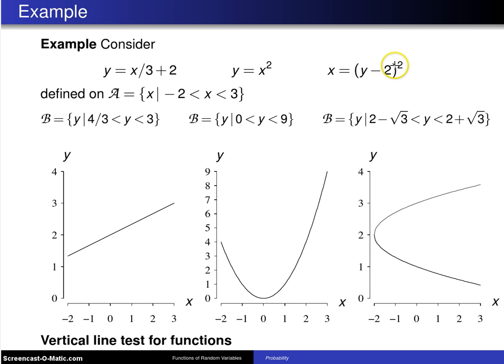And finally, x equals y minus 2 squared. The range of that particular function ranges from 2 minus the square root of 3. That's about down here, up to 2 plus the square root of 3, and that is up here.